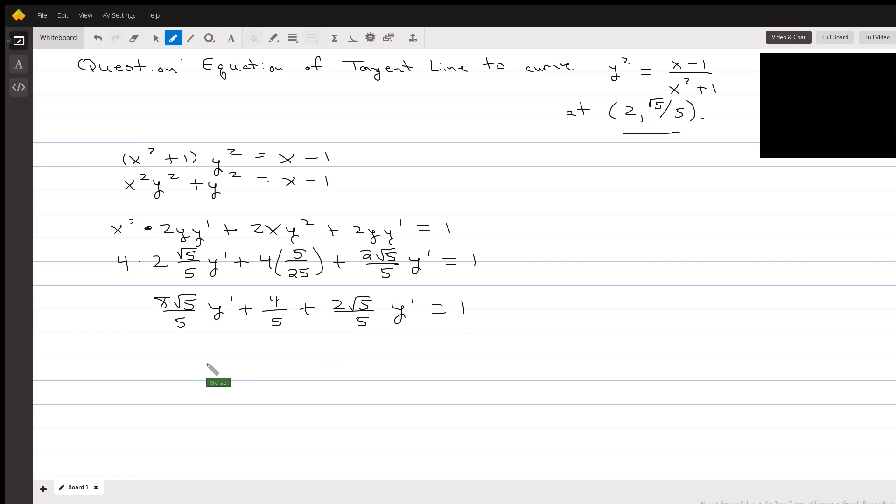Plus 2 root 5 over 5, y prime equals 1. Combining like terms, I'm going to have 10 root 5 over 5, which is just going to be 2 root 5. So 2 root 5 y prime.